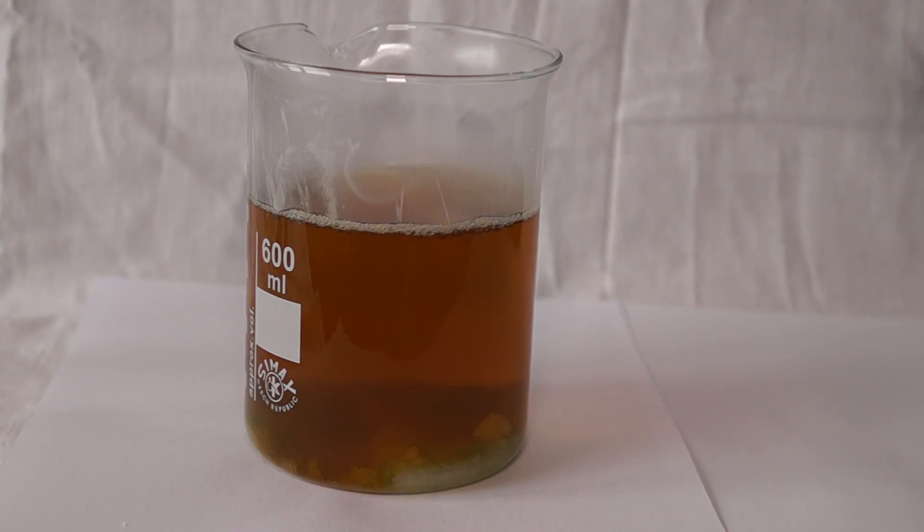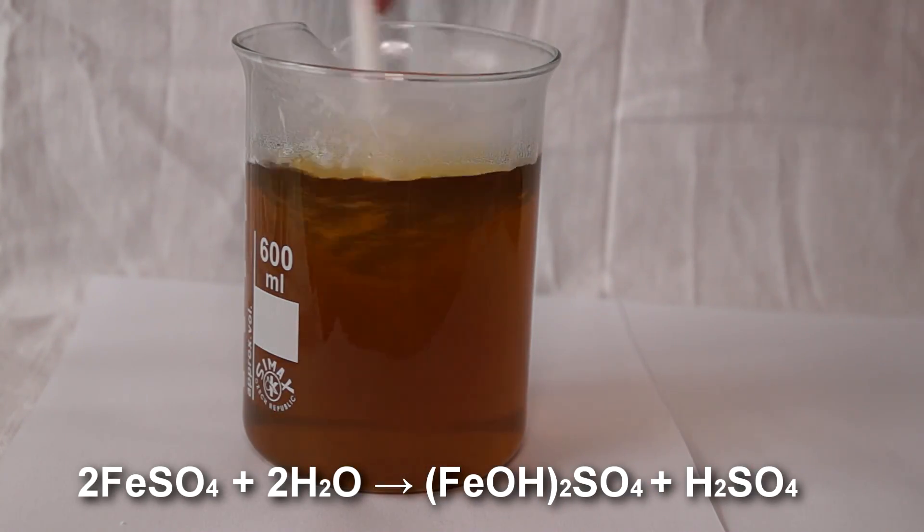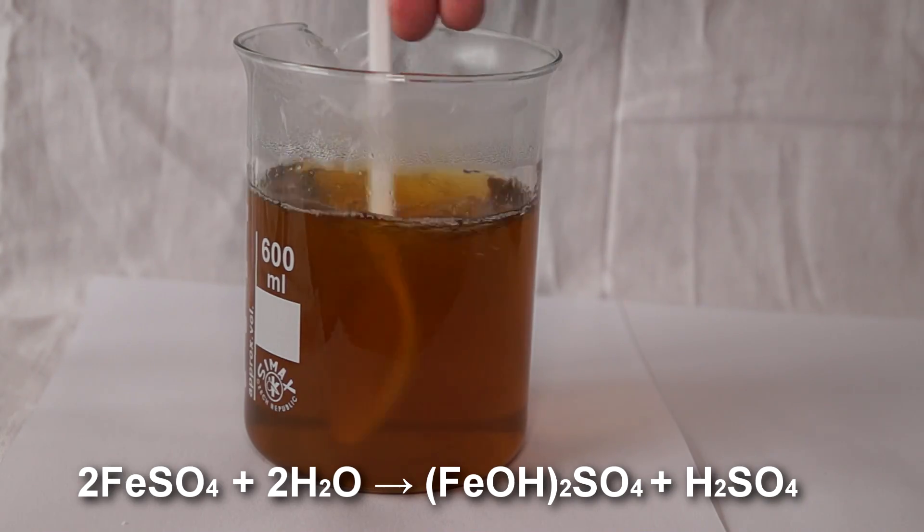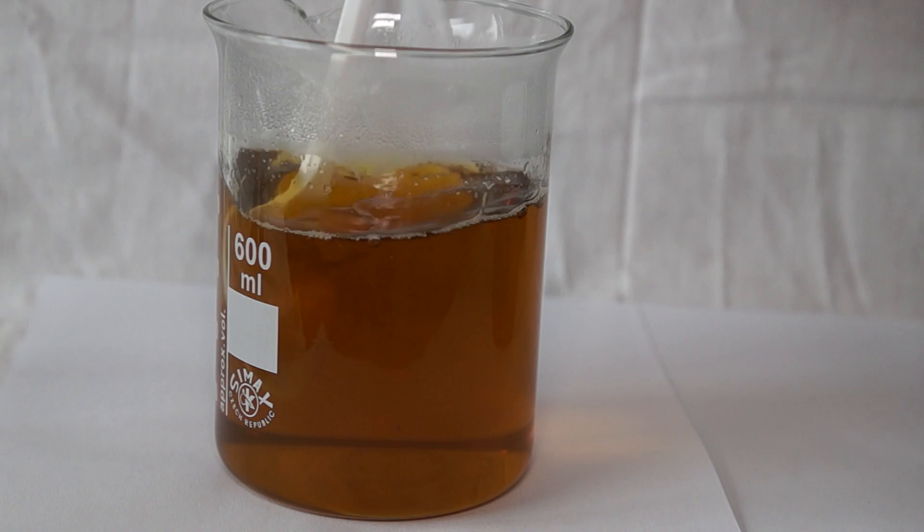Mix the solution until all the salt is dissolved. The solution will begin to acquire a brown color due to hydrolysis of iron(II) sulfate. Now we leave the solution for a day to cool down and to precipitate out the seed crystals.